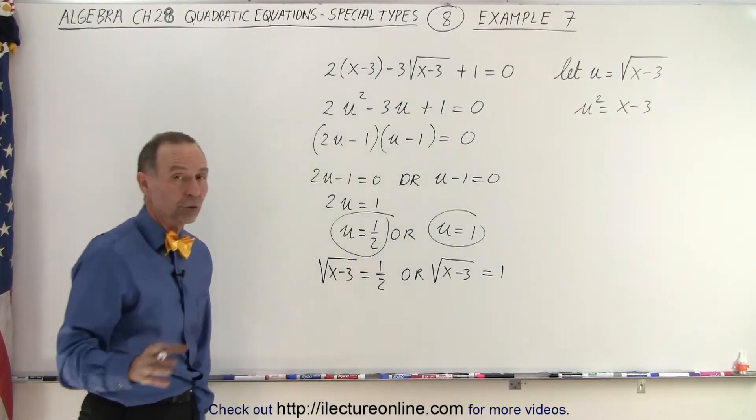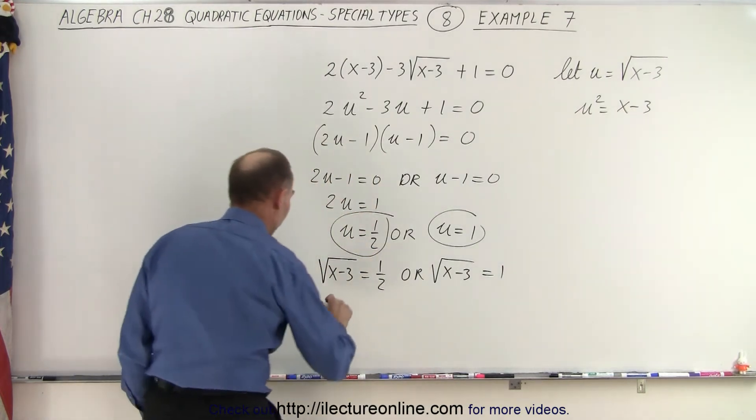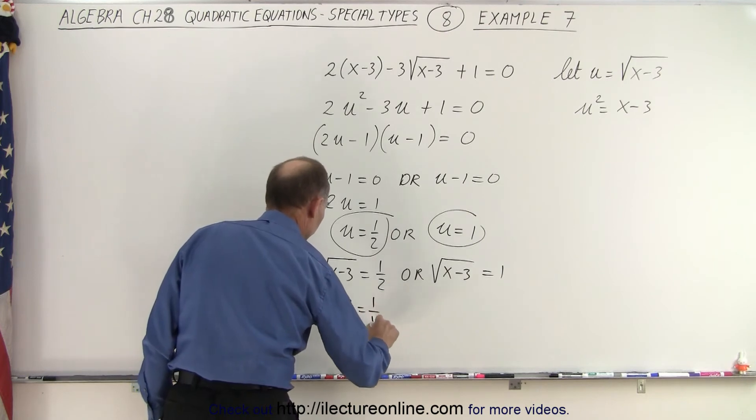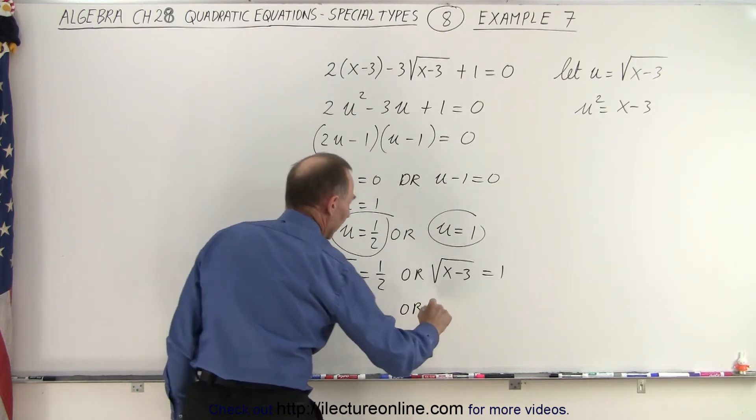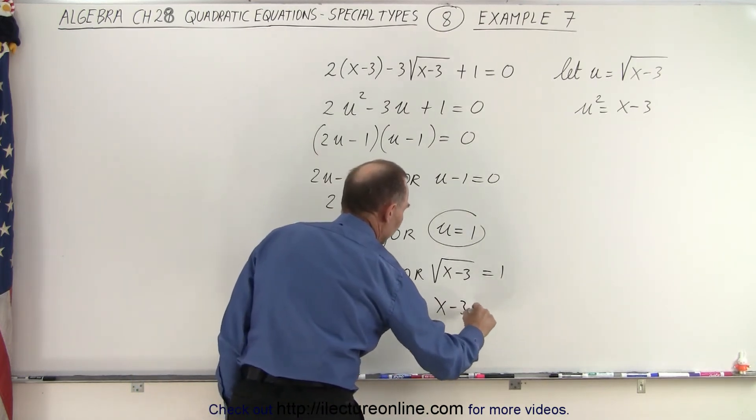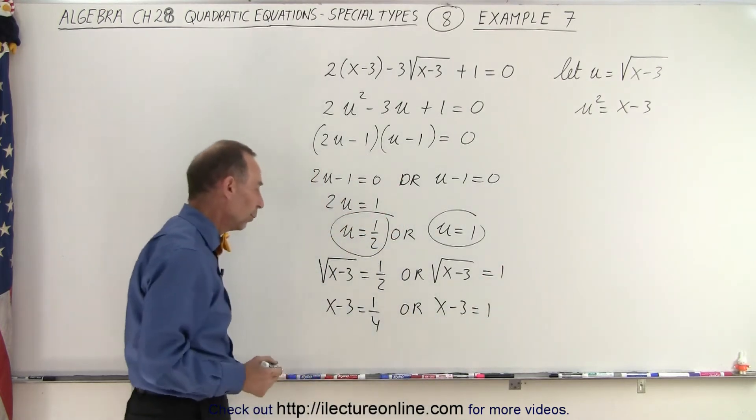The first thing we're going to do is square both sides. So we have x minus 3 is equal to 1-quarter, or x minus 3 is equal to 1. Of course, 1 squared is still 1.